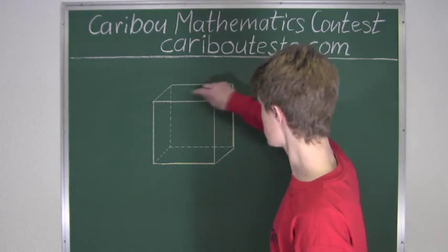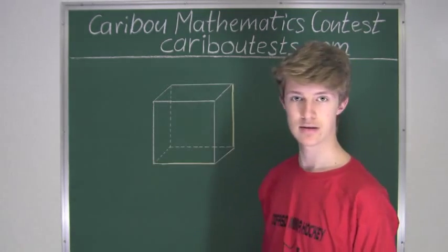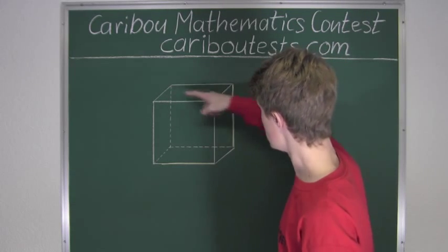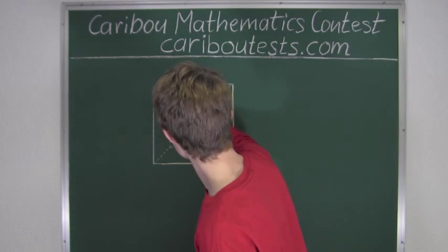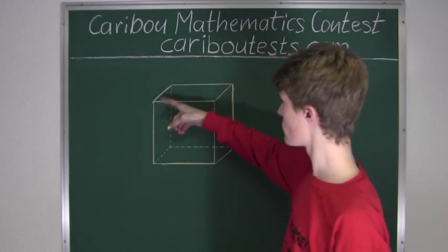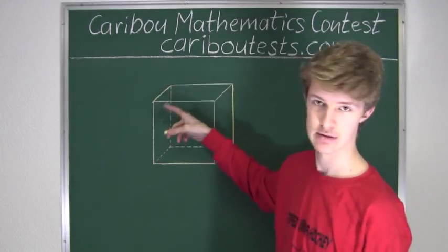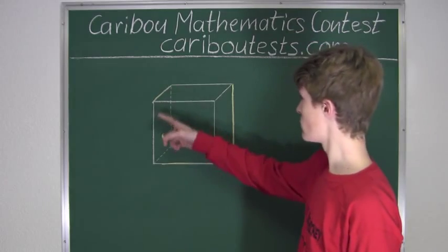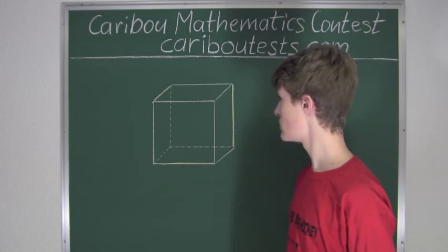So, of course, the only edge that can touch both is this edge right here. And we can see that this edge, of course, touches the top and is also one of the four edges that touches the left side face. So, therefore, we know that three yellow edges is enough to touch the six faces of the cube.